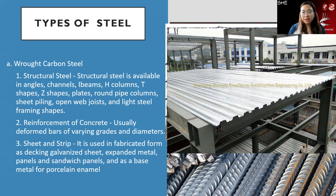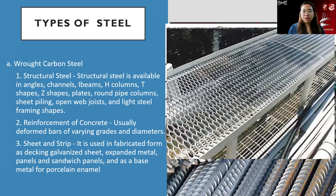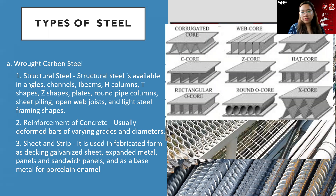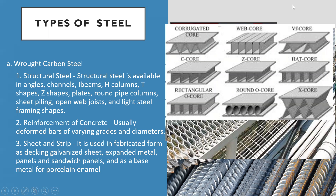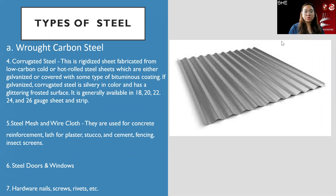Sheet and strip steel is used in fabricated forms such as decking, galvanized sheet, expanded metal panels, and sandwich panels. Decking is commonly used for second floors and is not removed — it stays permanently. It can also serve as the ceiling if not covered with a ceiling material. There are different core types for panels: corrugated core, web core, VF core, C core, Z core, hat core, rectangular O core, round O core, and X core.